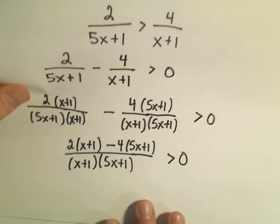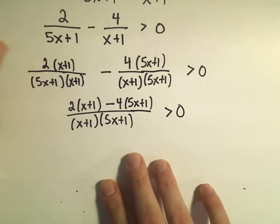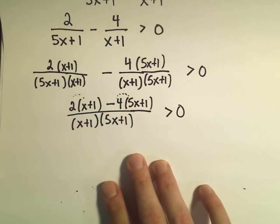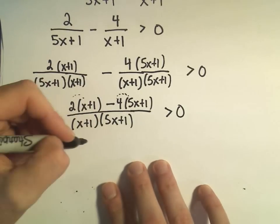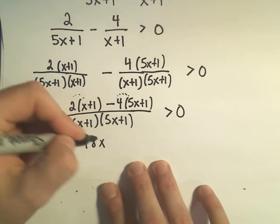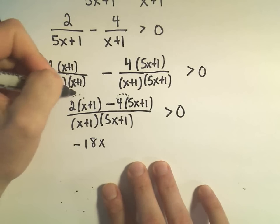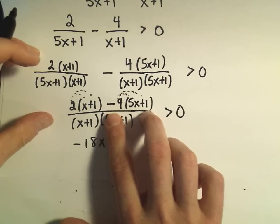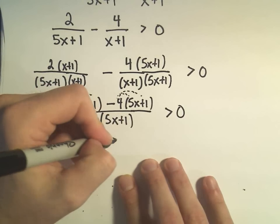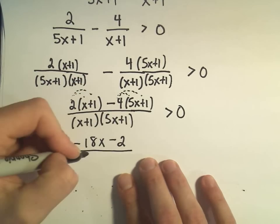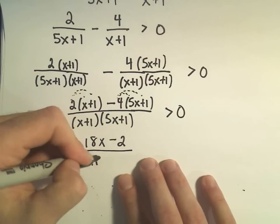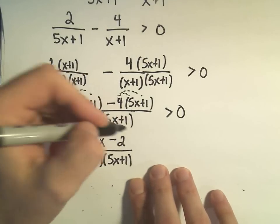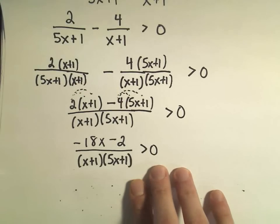Now I'm going to simplify the numerator. We would have 2 times x, and over here we would have negative 4 times 5x. So that's 2x minus 20x, which gives us negative 18x. Then we have 2 times positive 1, which is positive 2, and negative 4 times positive 1 gives negative 4. So 2 minus 4 gives us negative 2. The denominator is x plus 1 times the quantity 5x plus 1, and we want this to be greater than 0.